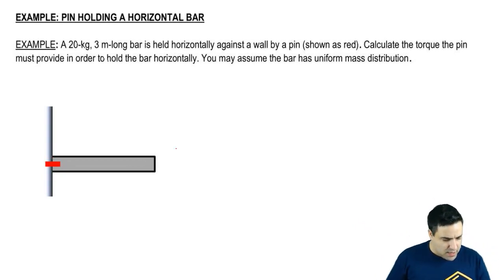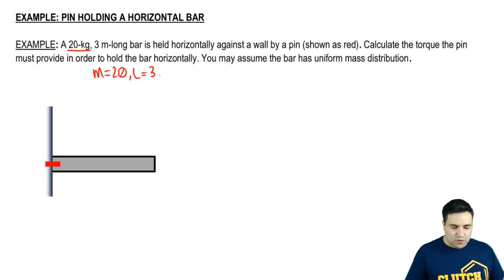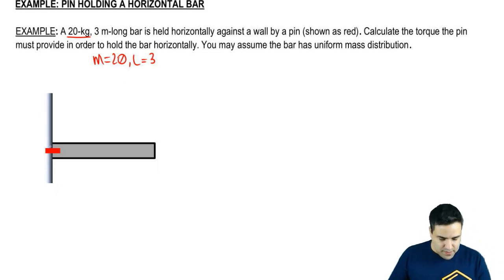So we've got the red pin here, and we're using it to try to balance the bar that has a mass of 20. So M equals 20, and a length of 3 meters. And it's held horizontally against the wall by the pin right here.